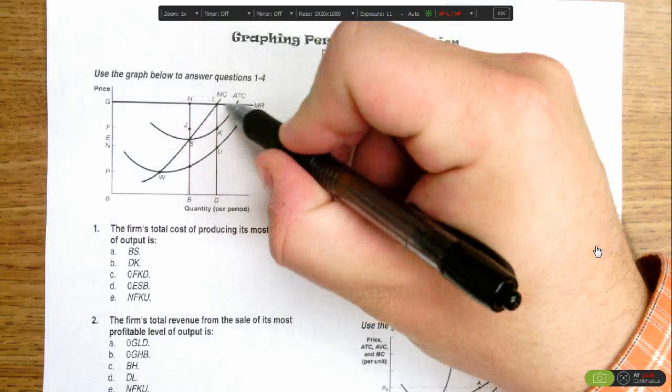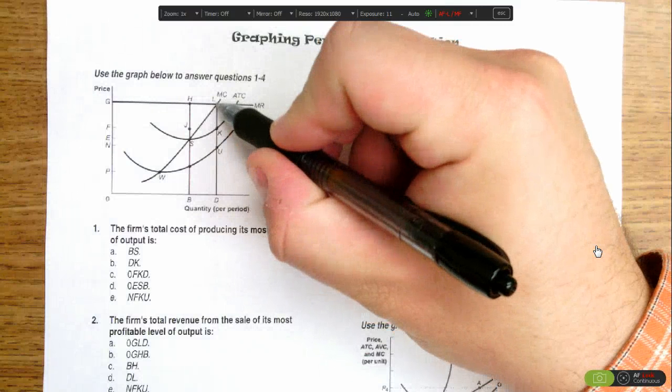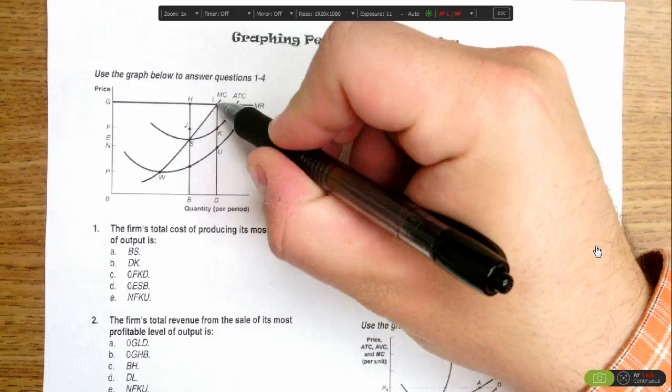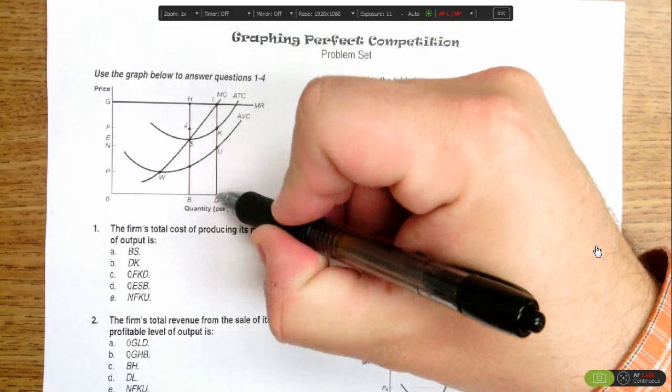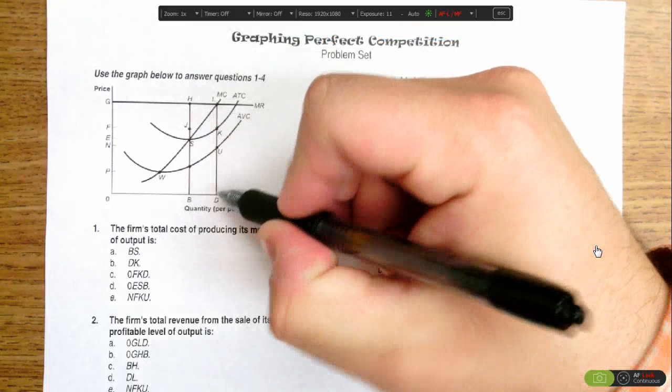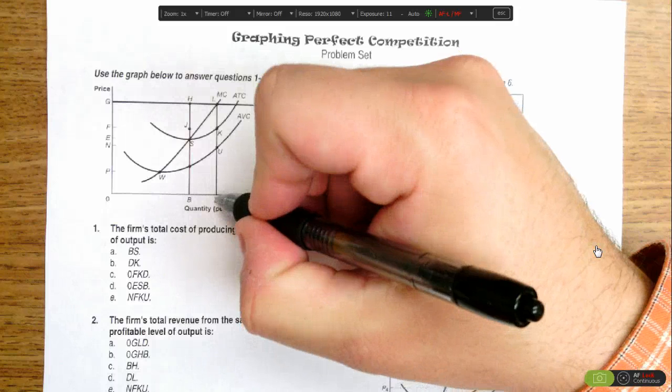So we look for where marginal revenue crosses the marginal cost curve, and that's going to be right here at this point L. We go straight down to the horizontal axis, we find that it's quantity of D. So that's our profit maximizing quantity.